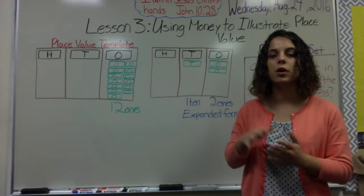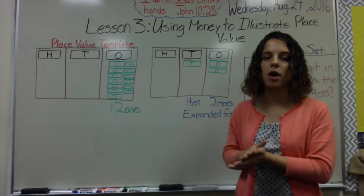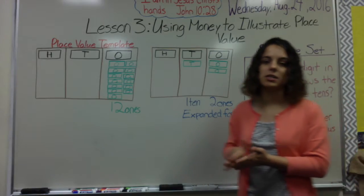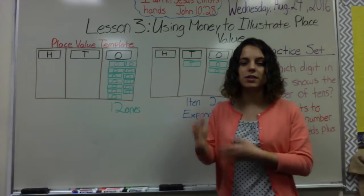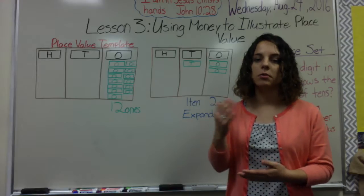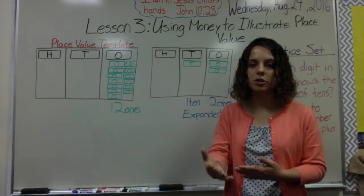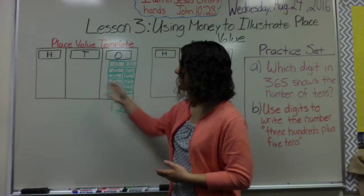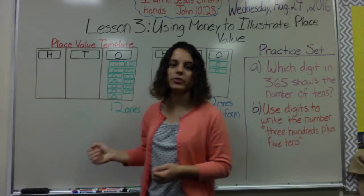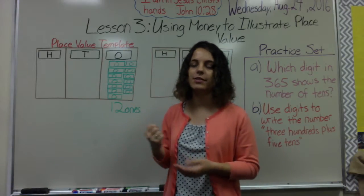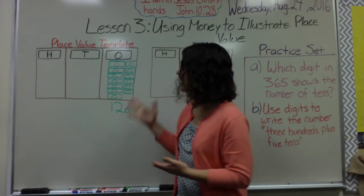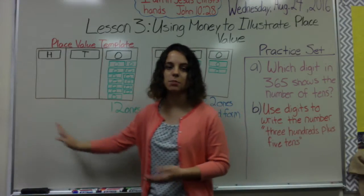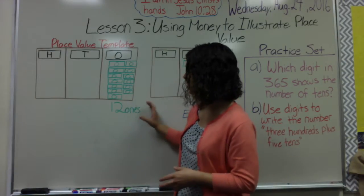We need to understand place value so we can build on more complex problems. We use money to illustrate this because most of us understand money — we receive money and purchase things with it using ones, tens, and hundreds. You also have fives and fifties, but we're only looking at ones, tens, and hundreds because those are what illustrate our place value.